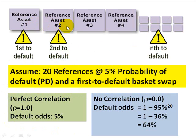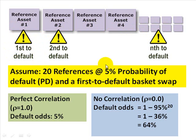To illustrate how tricky that is, assume we have 20 reference assets in the basket, and the attachment point is 1 — so we have a first-to-default. The basket is triggered as soon as the first asset, regardless of which one, defaults. The probability of default is 5% for each and every asset in the basket: 20 reference assets, 5% probability of default, first-to-default basket swap.